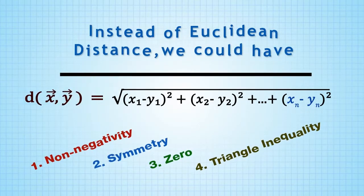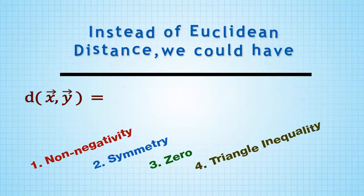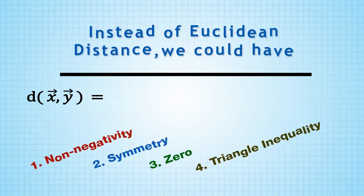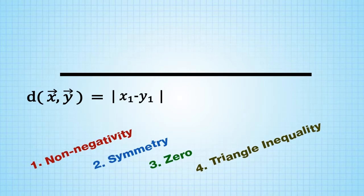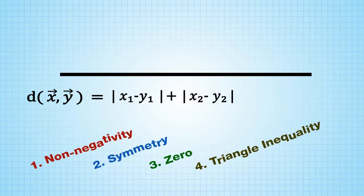Instead of Euclidean distance, we could have defined d(x,y) equals the absolute value of x1 minus y1 plus the absolute value of x2 minus y2 up to the absolute value of xn minus yn.